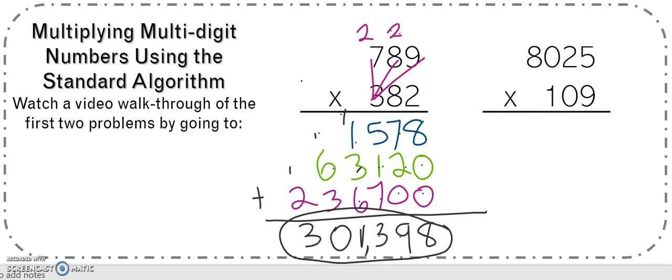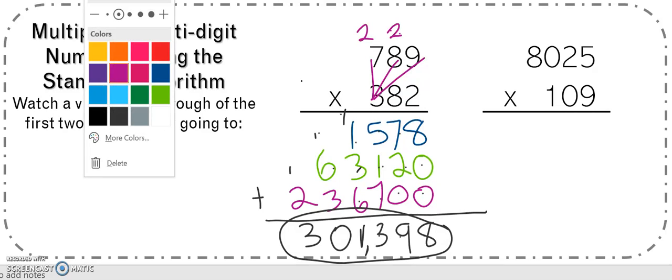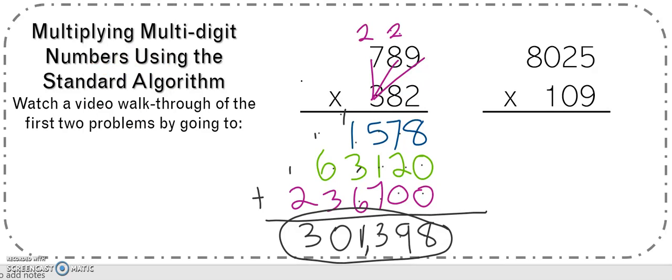So let's use that exact same strategy and move on to the next problem. I like to use different colors when I'm showing it to you. If it helps you to use different colors, go for it. It's not required. So I'm multiplying 8,025 by 109. All right.